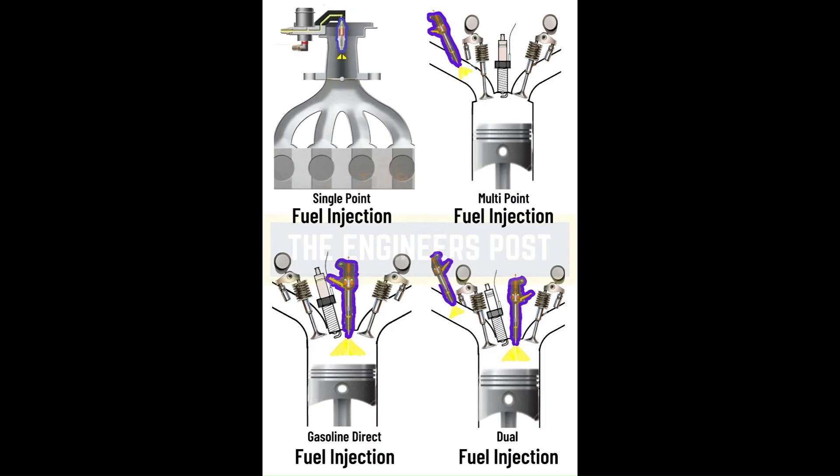Air Intake System: The engine's air intake system, including the intake valves and intake manifold, can also lead to energy waste. Flow Resistance: As air enters the combustion chamber through the intake valve, any restriction in the intake manifold, air filter, or valve port creates resistance which the engine must overcome.